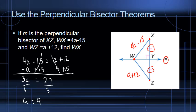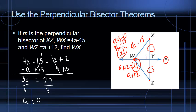Now to find WX, we substitute 9 for A. So WX equals 4 times 9 minus 15, which is 36 minus 15, giving us 21. To verify, we substitute 9 into the expression for WZ: 9 plus 12 also equals 21. So WX equals 21 and WZ equals 21, confirming our answer based on the information given.